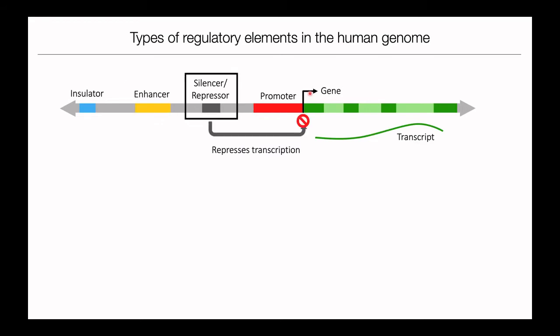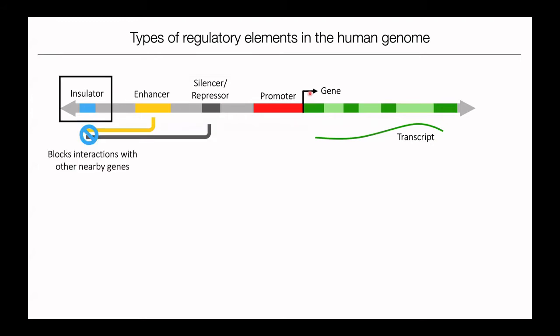We also have silencers, sometimes called repressors, which repress the activity of transcription. And there are insulator regions — our genome is a linear string of DNA with no inherent boundaries or road signs. Insulators serve as boundaries between different kinds of elements, and specifically can block interactions between enhancers and nearby promoters or transcription start sites.